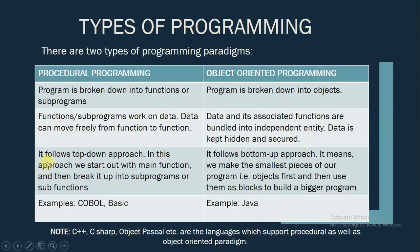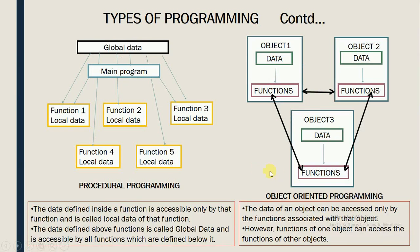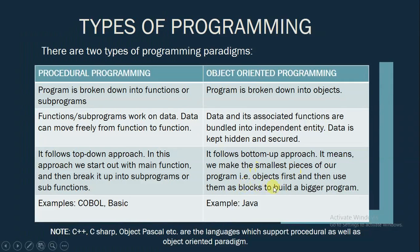Procedural programming follows a top-down approach. In this approach, we start out with the main function and then break it up into subprograms or subfunctions. However, object oriented programming follows a bottom-up approach, meaning we make the smallest pieces of our program — i.e., objects — first and then use them as blocks to build a bigger program.